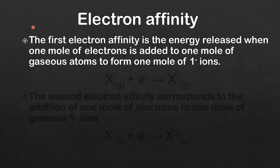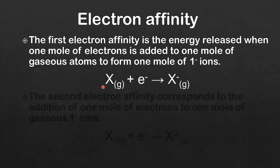Next we'll look at electron affinity, starting with a definition. The first electron affinity is the energy released when one mole of electrons is added to one mole of gaseous atoms to form one mole of one-negative ions. This can be represented by an equation showing one mole of electrons being added to one mole of gaseous atoms to form one mole of one-negative ions.